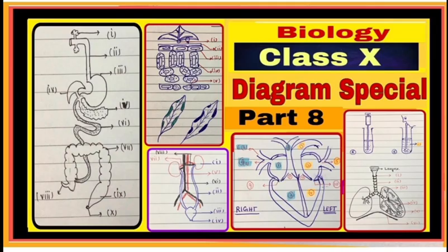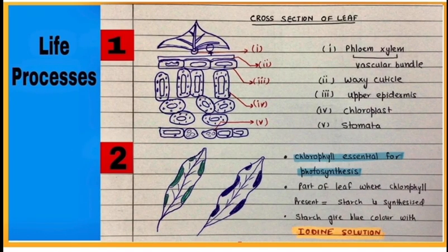Diagram 1 is a cross section of leaf. Part 4 is important for photosynthesis and part 5 is important for exchange of gases. Check their names. Diagram 2 is an experiment showing chlorophyll is necessary for photosynthesis. Starch is synthesized in a part of leaf having chlorophyll and shows positive results with iodine solution.